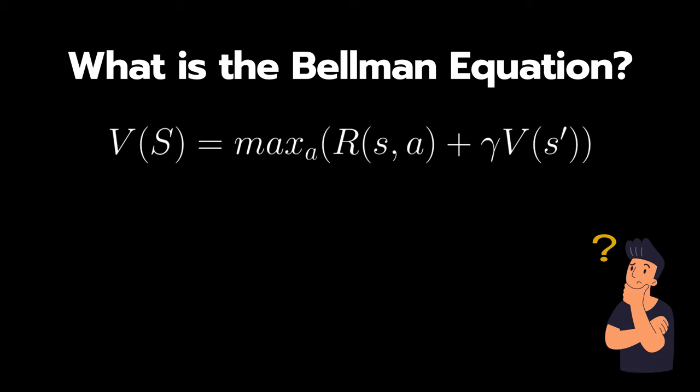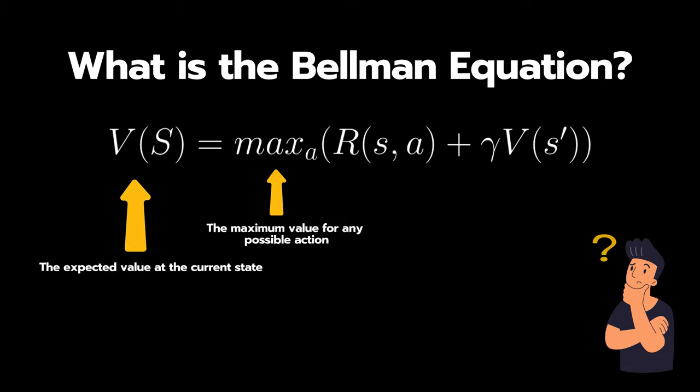This equation tells us that the value of any given state is the maximum value we can get by taking an action a that gives us an immediate reward denoted by R(s,a) and adding the discounted value of the next state, denoted by gamma which is a discount factor, and the value of the given next state is V(s').